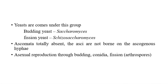A few types of yeast can be reproduced by fission — those are Schizosaccharomyces. These can be produced by fission, which is why they are called fission yeast. Here, ascomata is totally absent, and asca are not borne on the ascogenous hyphae — that we have to remember.